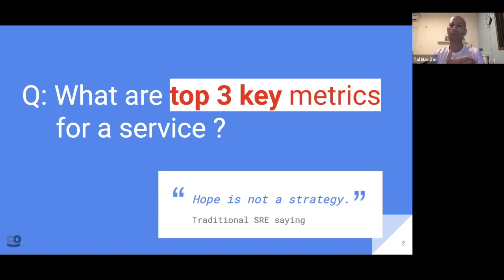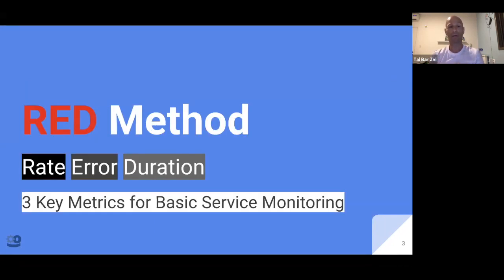What are top three key metrics for any service? Do you want that it will be a common knowledge that your team will know what are top three metrics for each service? If you answered yes to one of those questions, so this presentation is for you. RED method stands for R for rate, E for error, and D for duration.